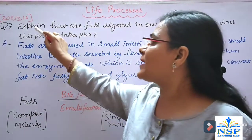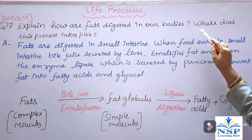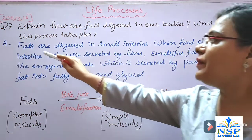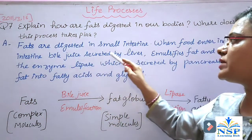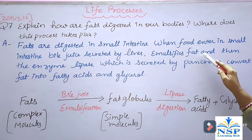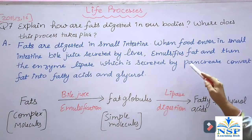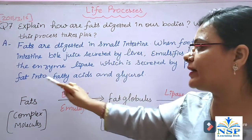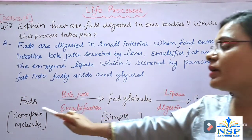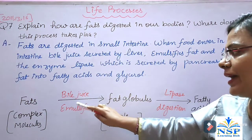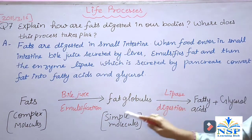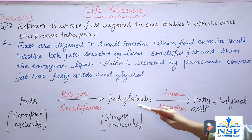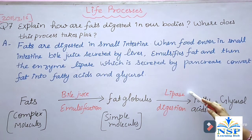Question number 7: Explain how fats are digested in our bodies. Where does this process take place? Fats are digested in the small intestine. When food enters the small intestine, bile juice secreted by the liver emulsifies fat. Then the enzyme lipase, secreted by the pancreas, converts fat into fatty acids and glycerol. Complex molecules of fat, when acted on by bile juice, change into fat globules — simple molecules of fat — after which pancreatic enzyme lipase digests them into fatty acids and glycerol.